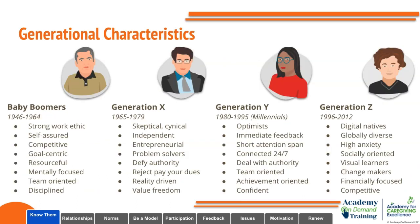Here's a quick overview of some of the different characteristics between generations. Baby Boomers, or people born between 1946 and 1964, tend to have a strong work ethic. They're self-assured, competitive, goal-centric, resourceful, mentally focused, team-oriented, and disciplined.